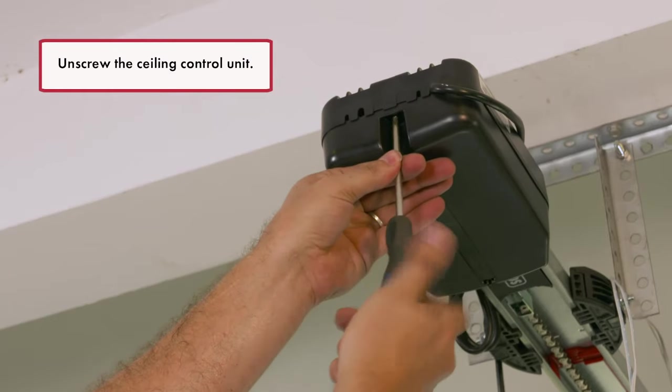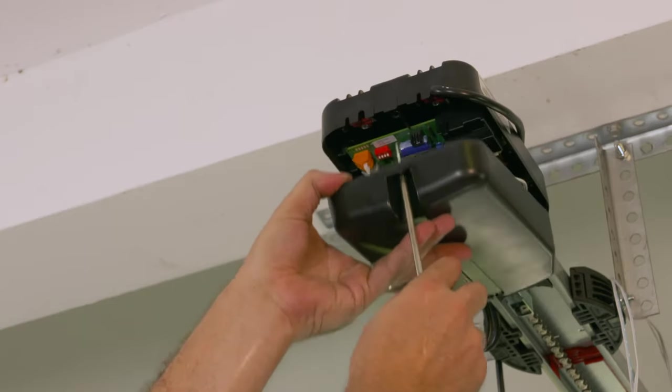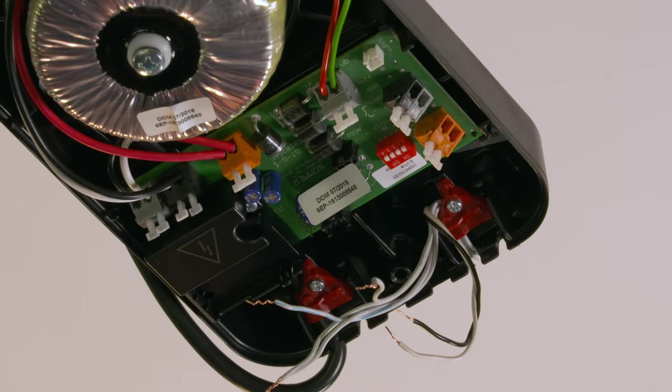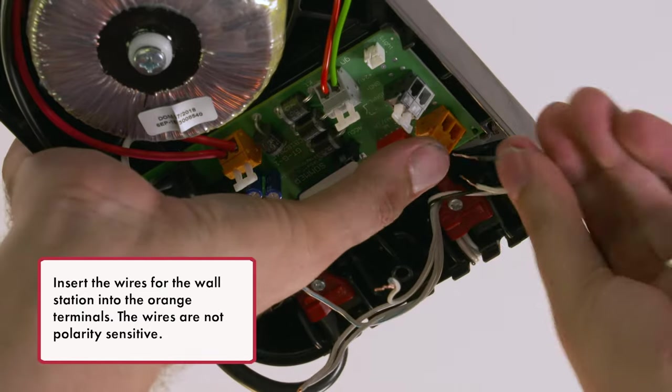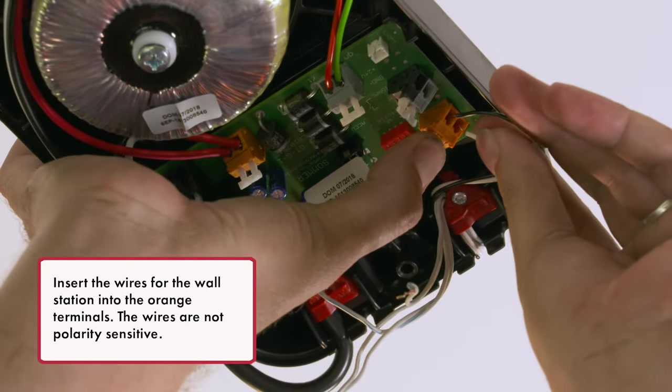Unscrew the ceiling control unit. Insert the wires for the wall station into the orange terminals. The wires are not polarity sensitive.